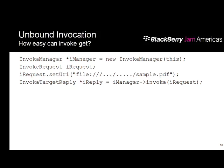If you thought invocation was easy so far, wait till you see this. All I'm doing is creating an InvokeRequest, setting a URI, and calling invoke. The invocation framework looks at the file extension — it's a PDF file, knows the MIME type — and finds targets that support opening PDF files. With literally four or fewer lines of code you can invoke to open a file. It knows you want to open because there is a default action, which is open.